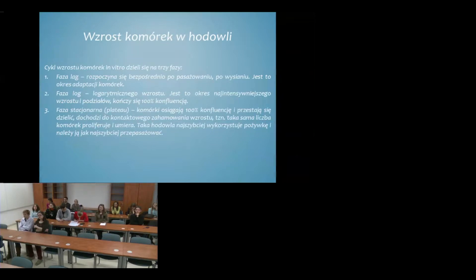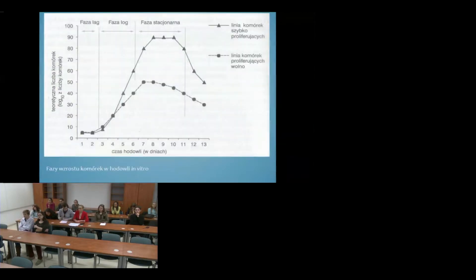Trzecia faza to faza plateau, kiedy komórki osiągają stuprocentową konfluencję i przestają się dzielić. Dochodzi wówczas do kontaktowego zahamowania wzrostu, gdzie taka sama liczba komórek proliferuje i umiera. W tej fazie najszybciej zużywane jest medium i hodowlę trzeba dość szybko przepasażować. Na schemacie przedstawione są fazy: adaptacja (lag), intensywny wzrost komórek (log) oraz faza stacjonarna.